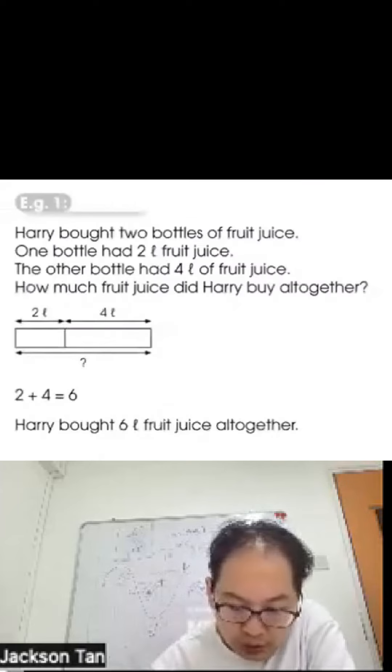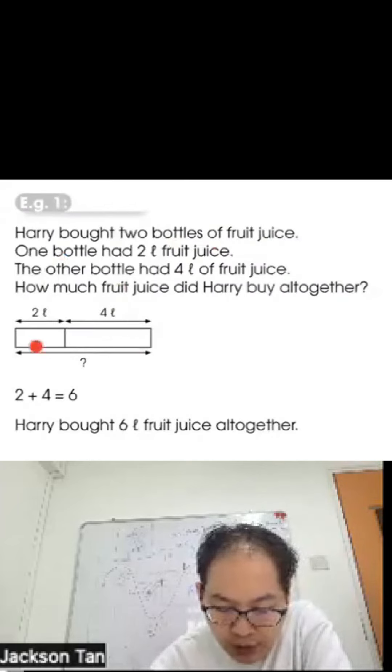Mastery level two: solve a problem involving addition and subtraction. Harry bought two bottles of fruit juice - one bottle has two liters, the other one has four liters. How much fruit juice did Harry buy altogether? So 2 plus 4 is 6. Harry bought 6 liters of fruit juice altogether.